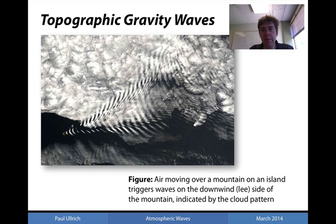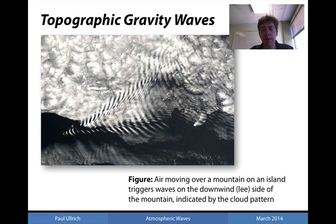Here's an example of topographic gravity waves. Here we're seeing a cloud street response to an isolated island. As flow is pushed upwards over the island, it leads to oscillations within the atmosphere, which then lead to regions of condensation and lack of condensation, hence producing a very pronounced effect in cloud formation.